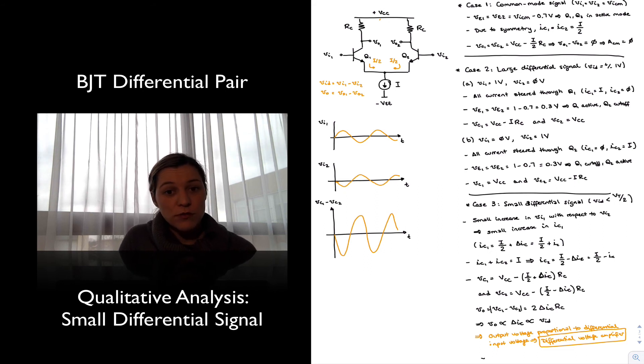The single-ended version of the differential pair will look as follows. We will still have the two transistors, Q1 and Q2, still connected in the emitters. And in this case,